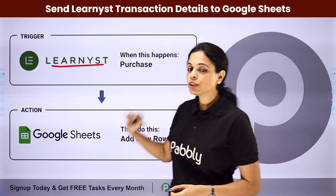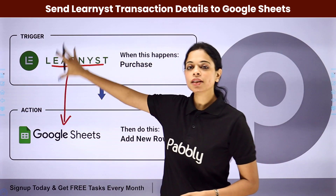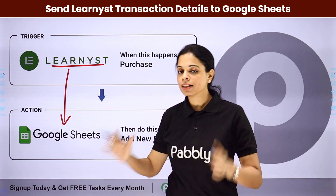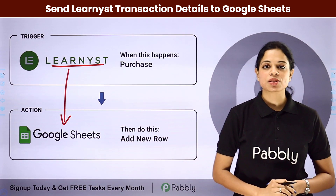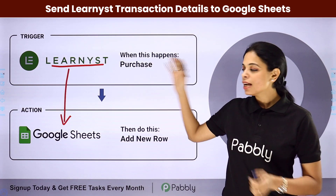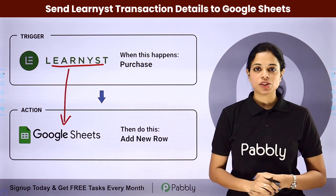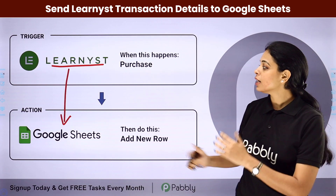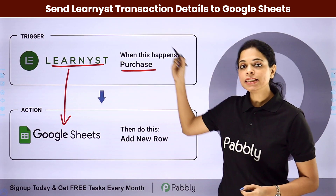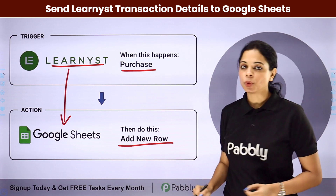How can you do that? For this, you will have to set up some integration between Learnist and your spreadsheet, and the same thing can be done using Pabbly Connect software. Here, your trigger application would be Learnist and your action application would be Google Sheets. Every time a purchase is made, automatically the details would be added in your Google Sheet as a new row.